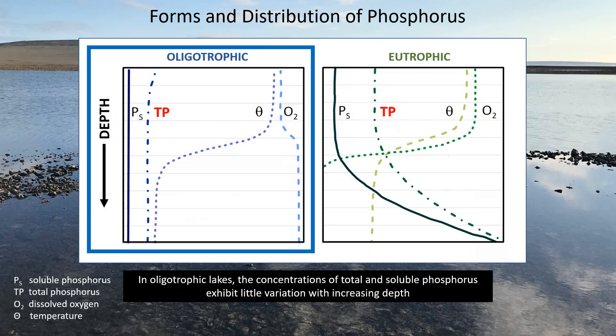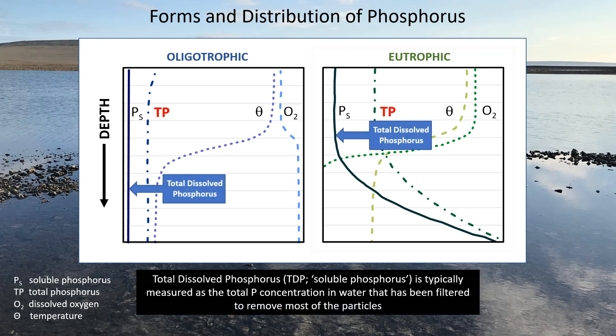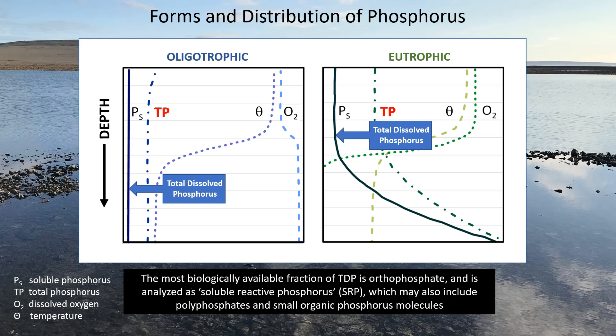In oligotrophic lakes, the concentrations of total and soluble phosphorus exhibit little variation with increasing depth. But eutrophic lakes with strongly clinograde oxygen profiles commonly show a pronounced increase in phosphorus content in the lower hypolimnion. Total dissolved phosphorus, TDP, or soluble phosphorus, is typically measured as the total P concentration in water that has been filtered to remove most of the particles. The most biologically available fraction of TDP is orthophosphate, and is analyzed as soluble reactive phosphorus, which may also include polyphosphates and small organic phosphorus molecules.